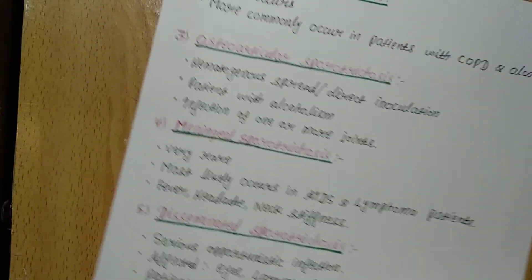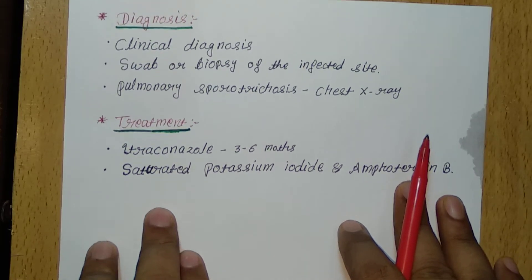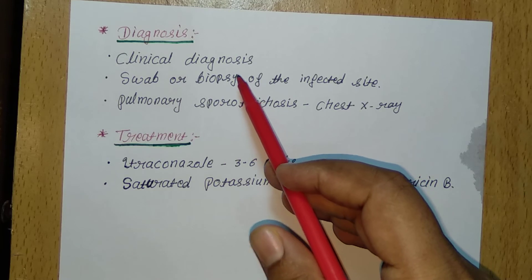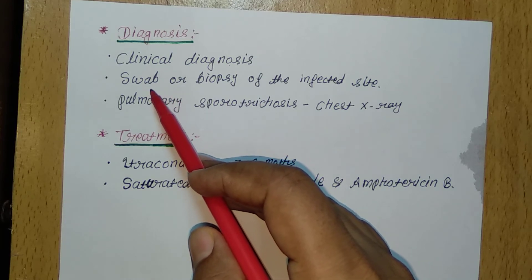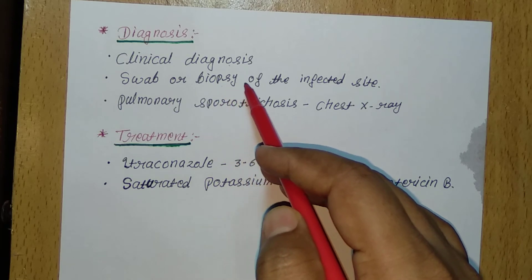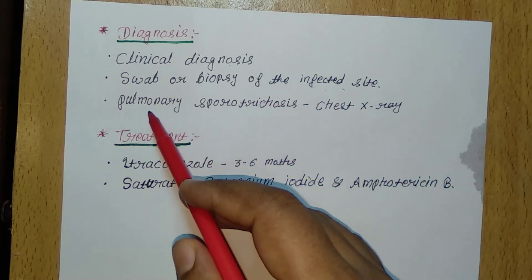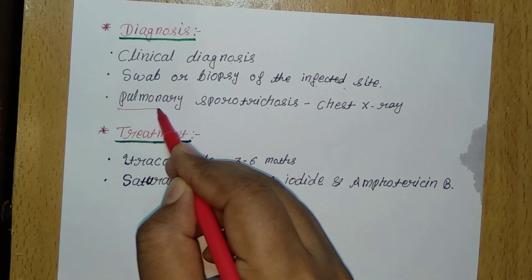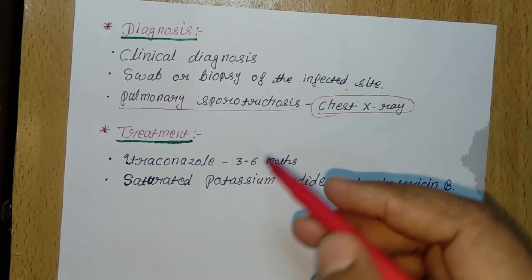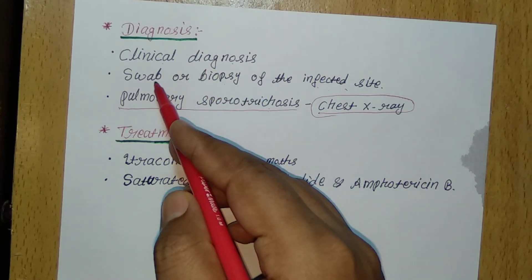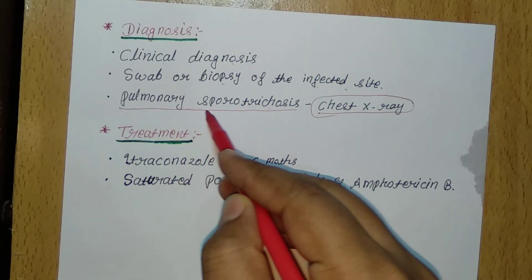For diagnosis of Sporotrichosis, we use clinical diagnosis. We can also use a swab or biopsy from the infected site of the patient. For pulmonary Sporotrichosis specifically, a chest X-ray can be used.